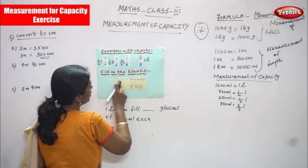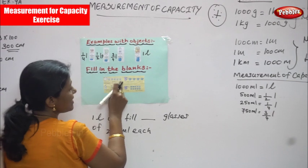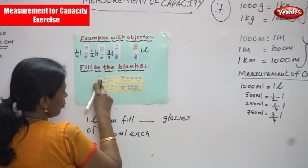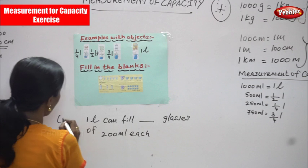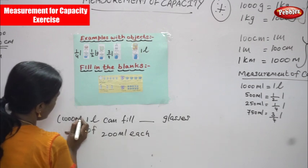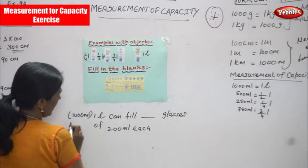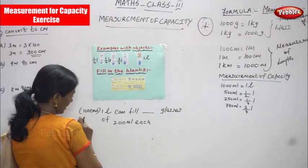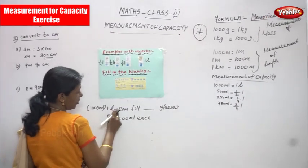See how many: 1, 2, 3, 4, 5. Each glass. This is a one liter — that is thousand. One liter is equal to nothing but thousand ml. One liter is equal to thousand ml. Thousand ml can. The thousand ml is equal to one liter.